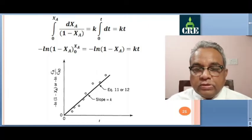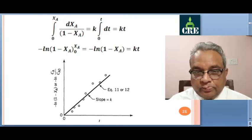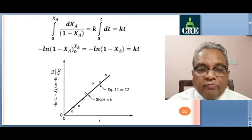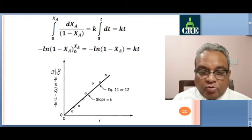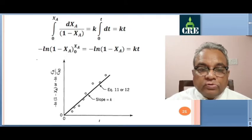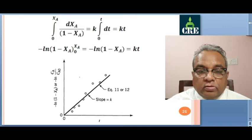Welcome to this lecture series in Chemical Reaction Engineering 1. Today we will continue with our third lecture. What we have seen last time is first order rate law and finally the integrated form of first order rate law, where we have seen this expression: minus ln of 1 minus XA is equal to kt, and this when we have plotted in y equals mx form.